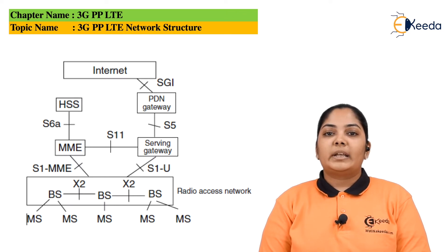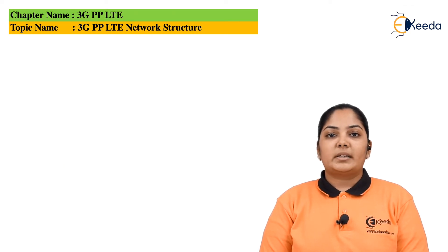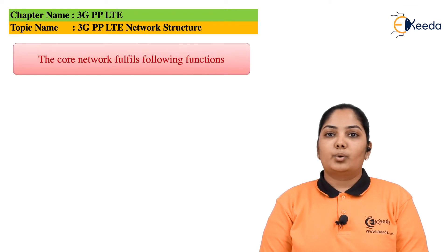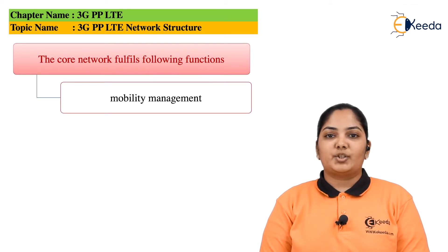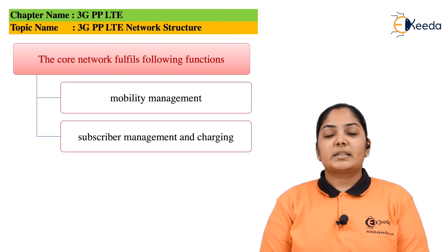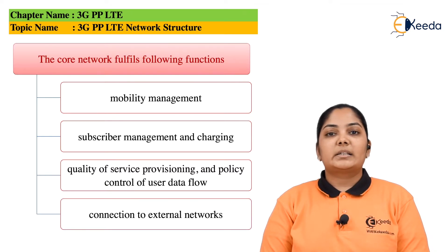In addition, there is a different entity called the Home Subscriber Server. Let us see the functionalities of the Core Network. The Core Network fulfills the following functions: Mobility Management, Subscriber Management and Charging, Quality of Service Provisioning and Policy Control for User Data Flow, and connection to External Networks.